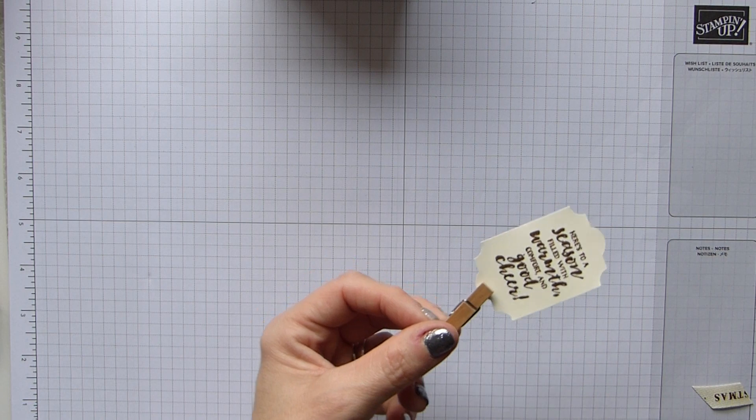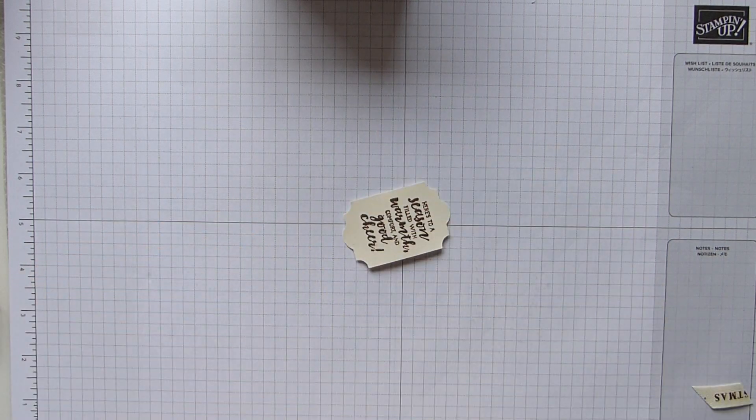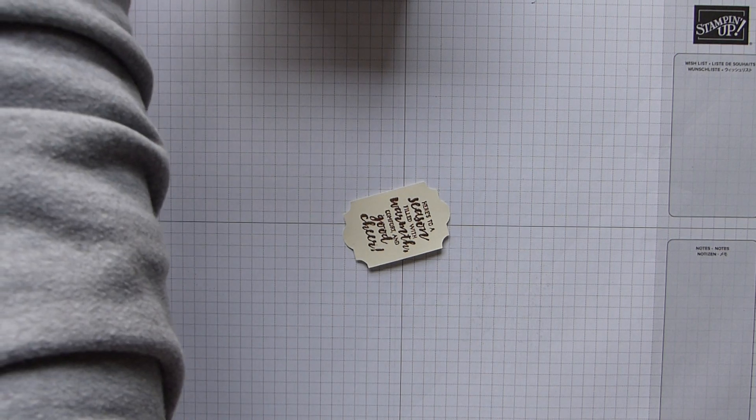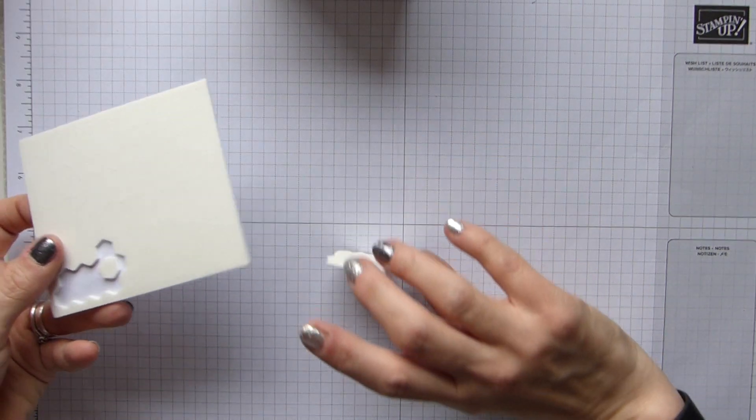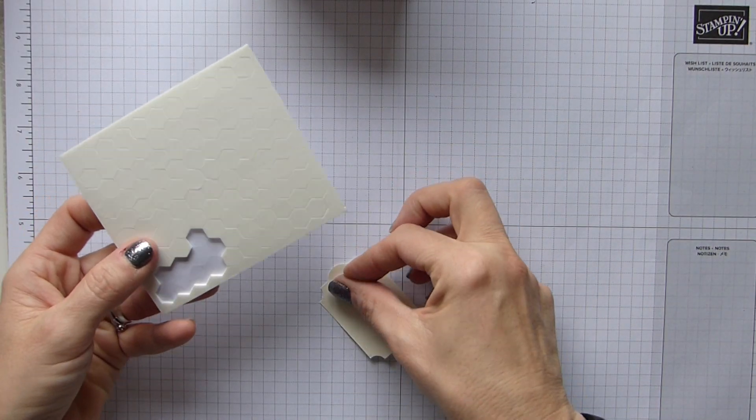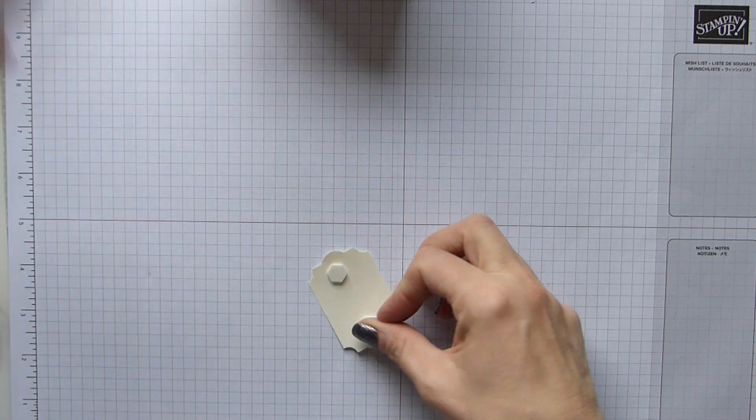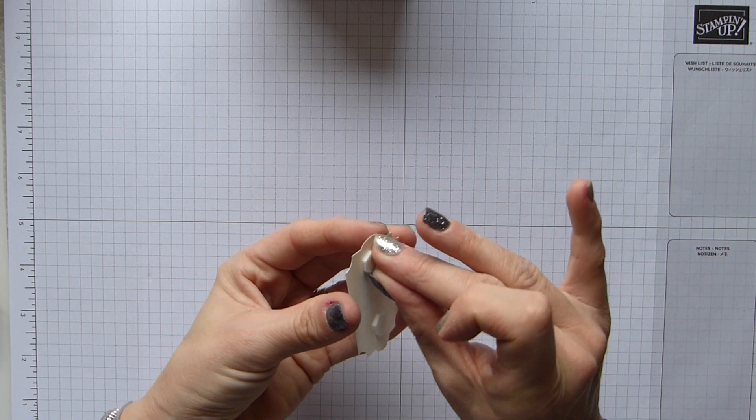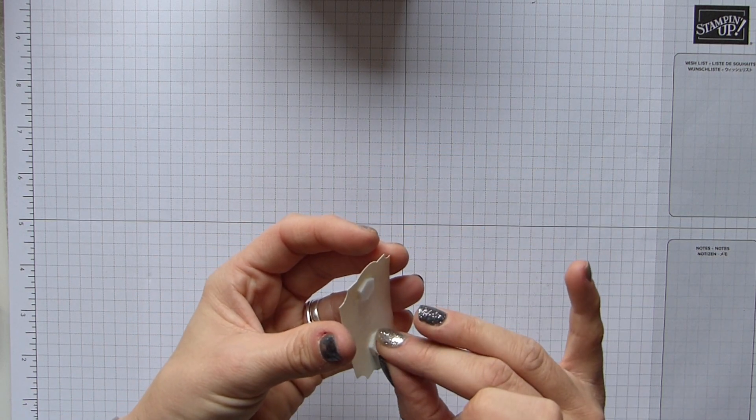There we go, a quick bit of heat embossing there. Pop it down for a second, and then I just need some dimensionals on the back just to hold it in place. And then I'll just pop this on the front.